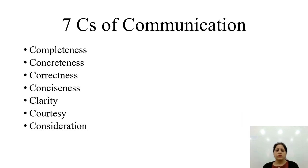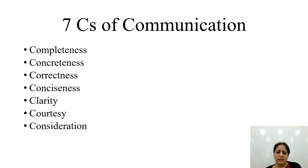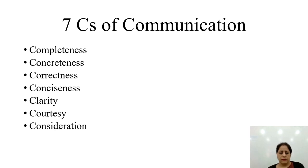Moving on to the next topic, we are going to discuss about the seven C's of communication. The seven C's of communication are: completeness, concreteness, correctness, conciseness, clarity, courtesy and consideration. We will be discussing each and every point one by one.